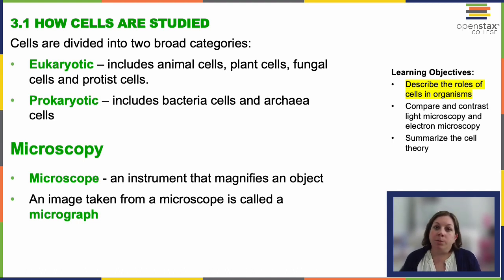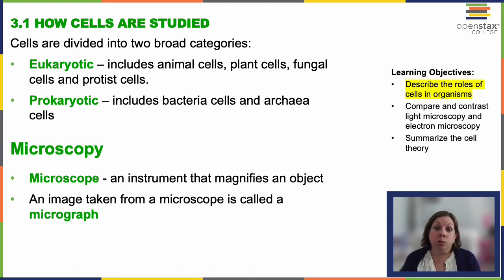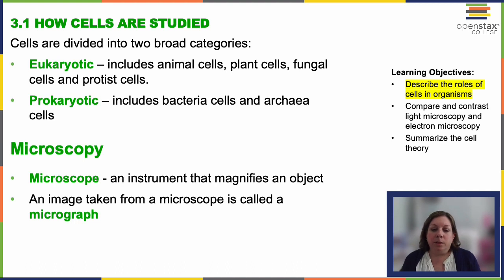Eukaryotic cells tend to be more complex; this is where we're going to see multicellular life. Versus prokaryotic cells — there are no multicellular prokaryotic cells. They lack a nucleus and don't have membrane-bound organelles; that's going to be bacteria and archaea. Even the most complex and large eukaryotic cells are not really visible with the naked eye.